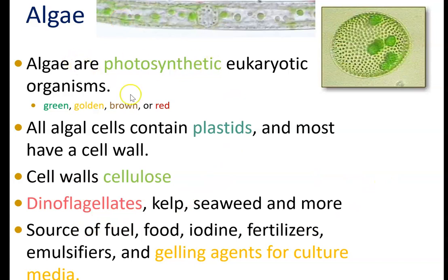Algae are extremely important to a lot of different things. They can be sources of fuel and food. We get iodine from them, fertilizers, emulsifiers. A lot of the stabilizers and gelling agents that we use in food production come from algae. The gelling agent that we use for our culture media actually came from a red marine algae — so agarose comes from red marine algaes.